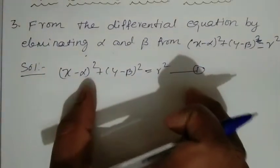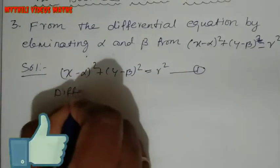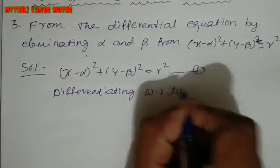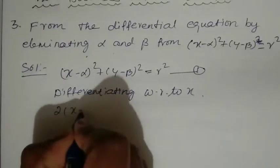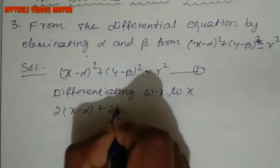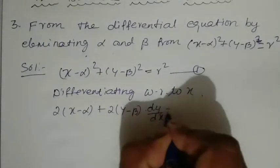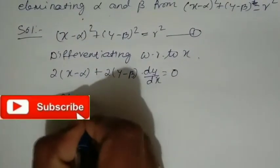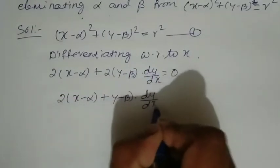Next, we will differentiate with respect to x. Differentiating equation 1 with respect to x, we get: (x minus alpha) plus 2 into (y minus beta) into dy/dx equals 0, since r is a constant. So this gives us equation 2: (x minus alpha) plus (y minus beta) into dy/dx equals 0.